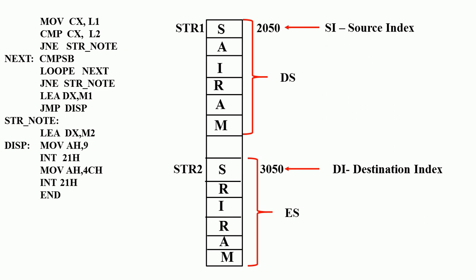To summarize: first we compare the length of string 1 with the length of string 2. If the lengths are not equal, we display 'string not equal'. If L1 equals L2, then we proceed to compare individual characters. If all characters are equal, display 'string equal'; otherwise display 'string not equal'.